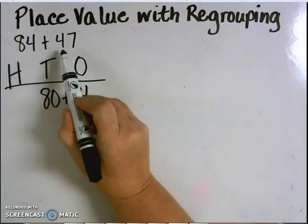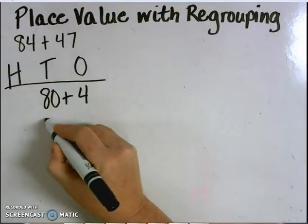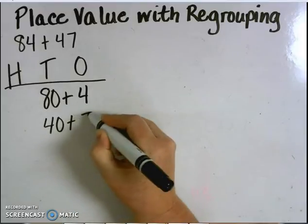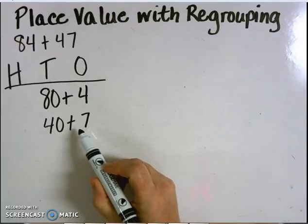In the number 47, there are four tens, or 40, and seven ones left over. Now that I've broken apart by place value,